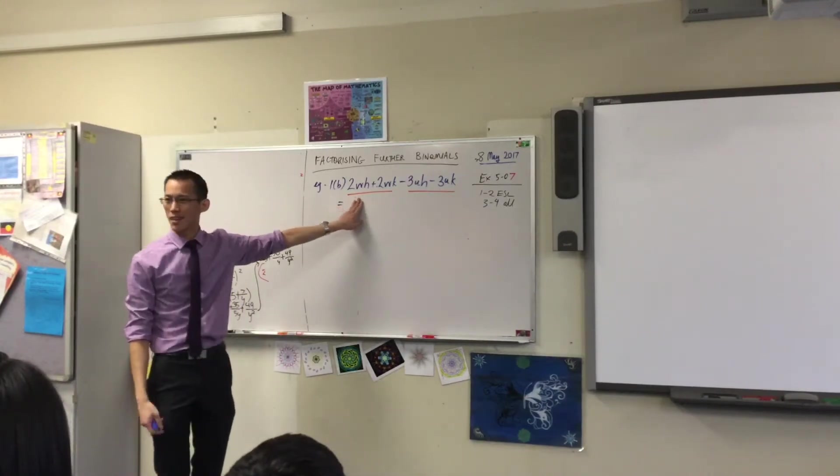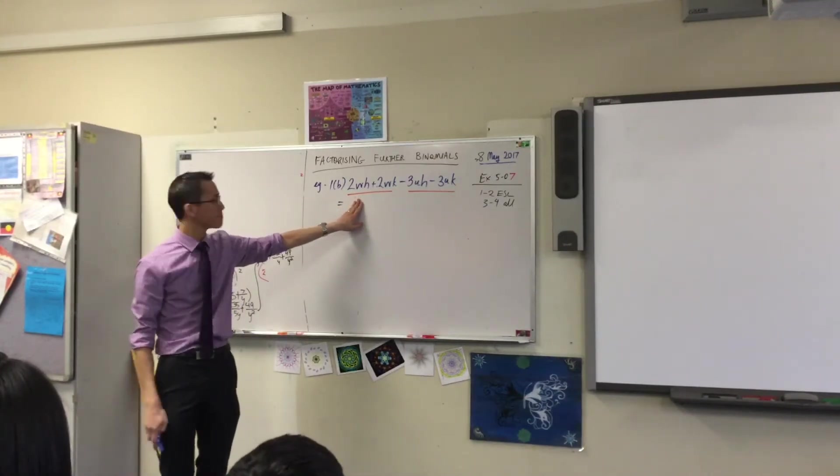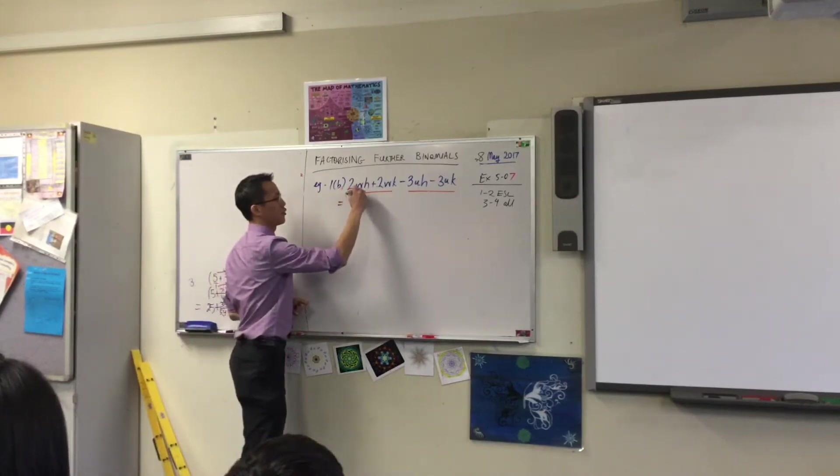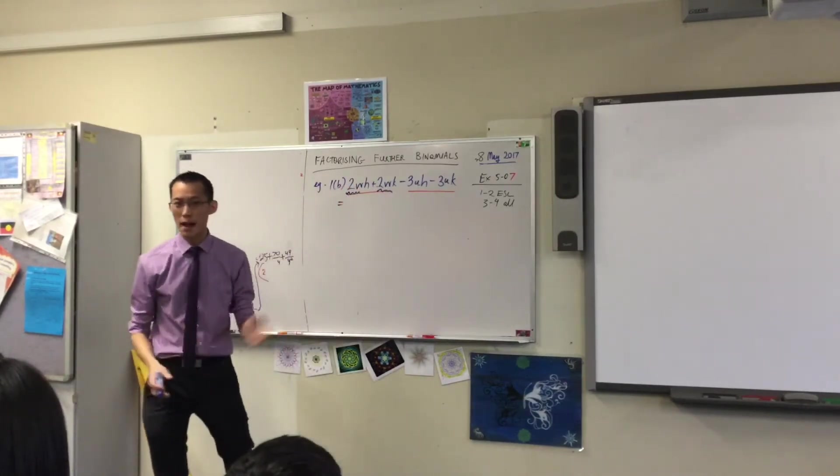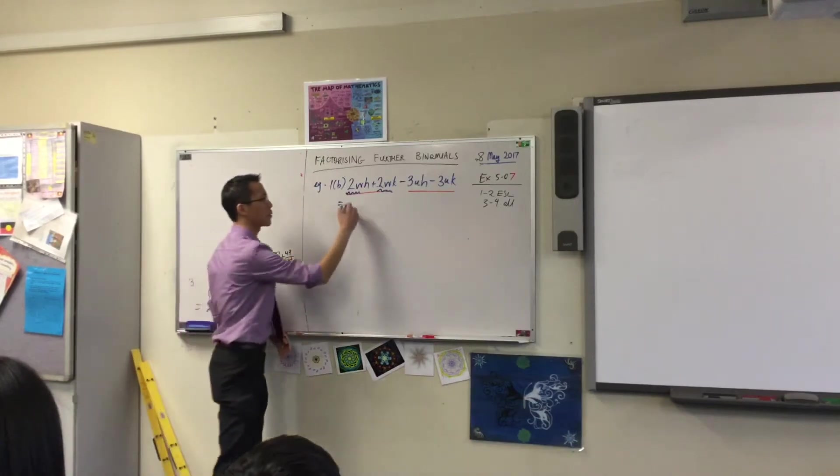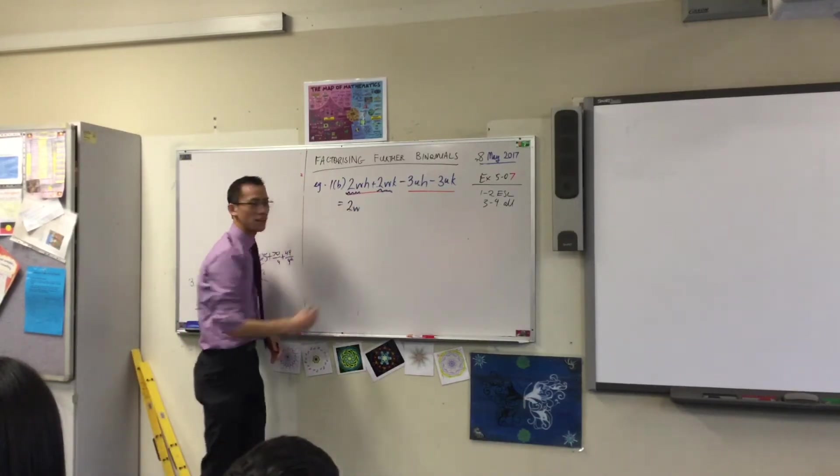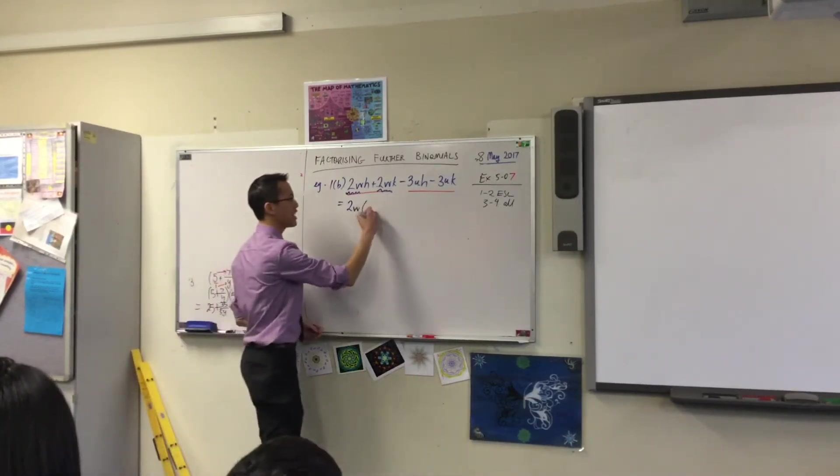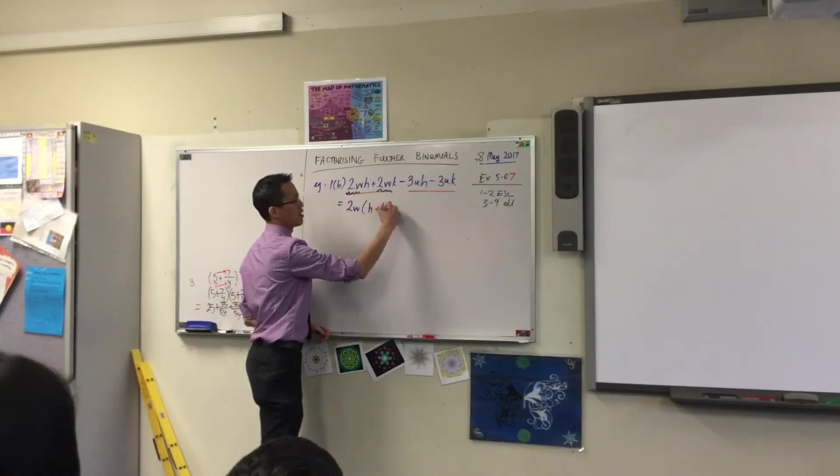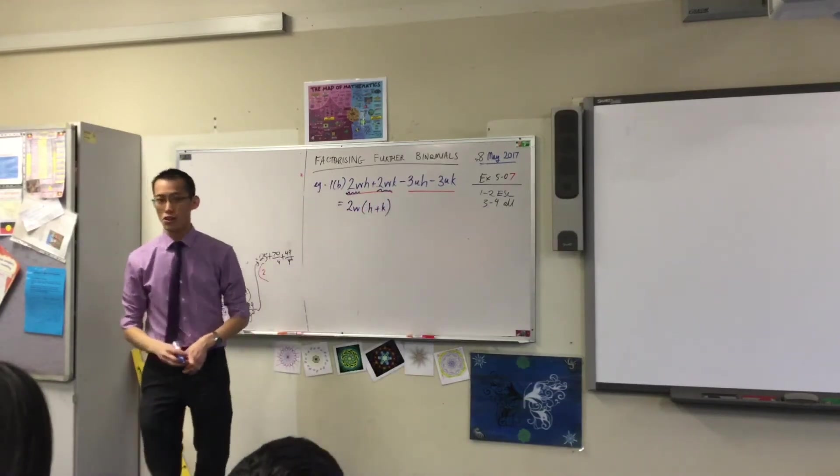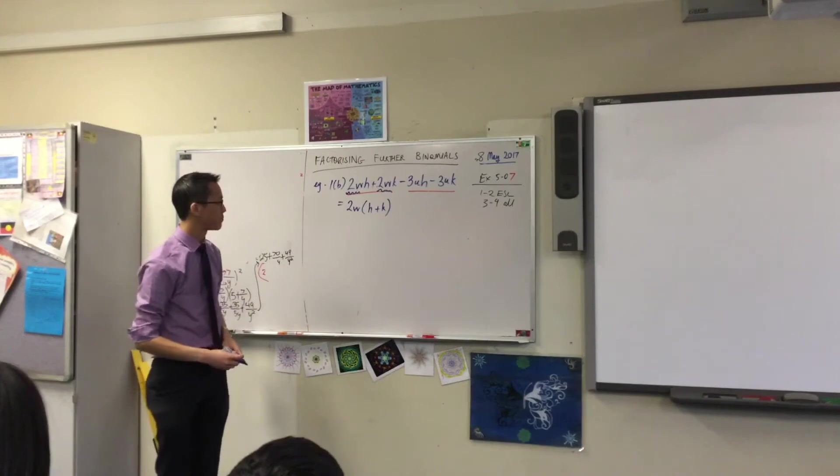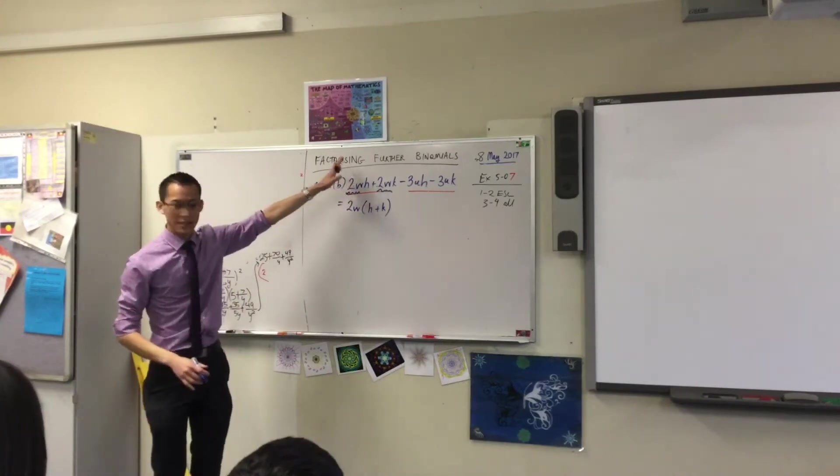First two terms. What do you see in common? Two W here, two W here. They only differ by the H and the K. So I'm going to factorize out the two W, which leaves me with the H plus the K. Note the sign, that's important. You've dealt with the first pair, that's good.